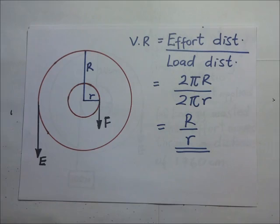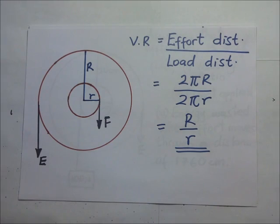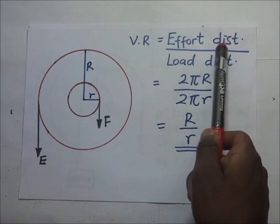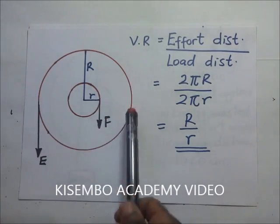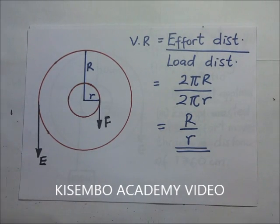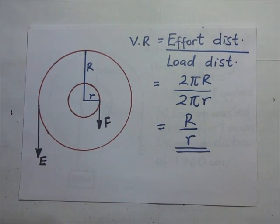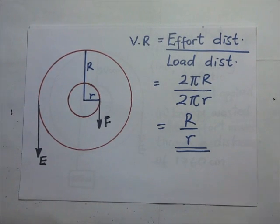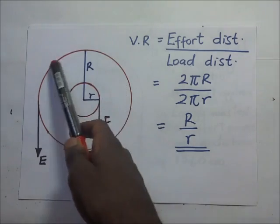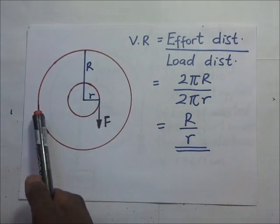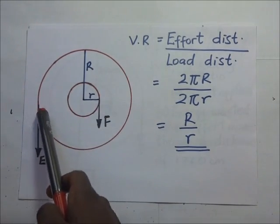To find the velocity ratio, remember that by definition, the velocity ratio is the ratio of the distance moved by the effort to the distance moved by the load. When the wheel and axle are rotating, the distance moved is equivalent to the circumference of those circles. So the effort distance is equivalent to the circumference of the big circle, because when you pull, it is the large circle that is rotating.